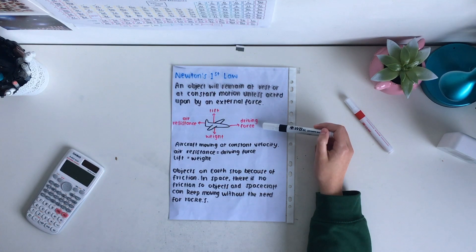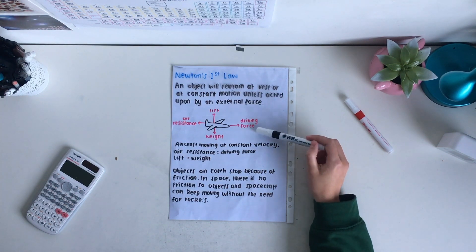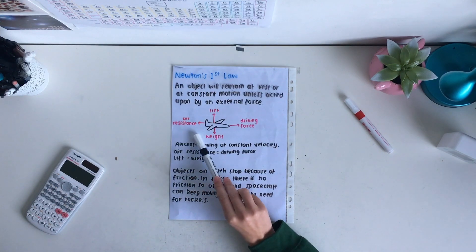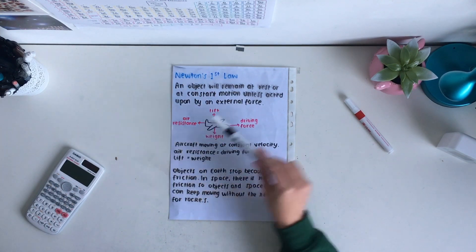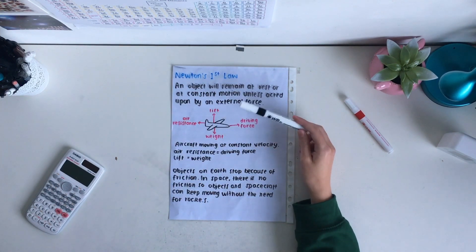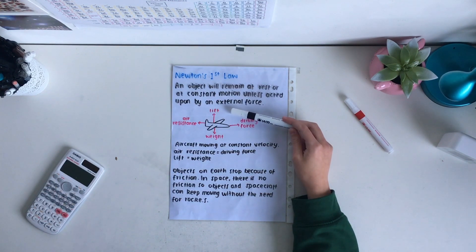For example, an aeroplane moving at constant velocity and constant altitude has a driving force forward, an air resistance acting in the opposite direction to the driving force, a weight acting downwards and a lift acting upwards in the opposite direction to weight.